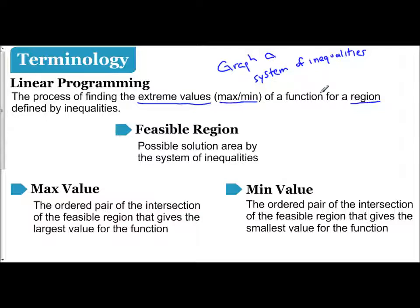We're going to be graphing a system of inequalities, and that region we're going to use to find extreme values based off of a function. And we're going to call that region the feasible region. The feasible region is the possible solution area by the system of inequalities.